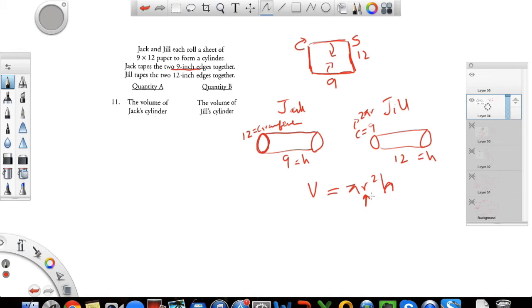So in this case, the bigger volume would be with Jack's. Because here the circumference is 12 compared to 9 for Jill's case. And a bigger circumference will give you a bigger radius. Hence a bigger volume. So Jack would have a higher volume or a bigger volume. So A would be the answer in this case.